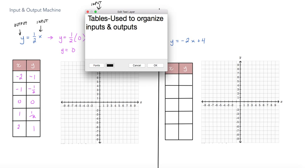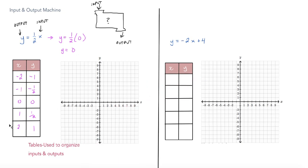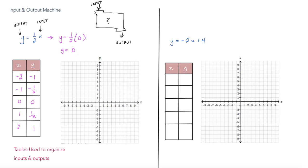A graph is used for plotting those inputs and outputs. Not only are these things inputs and outputs, but they're also coordinate pairs with X and Y values.